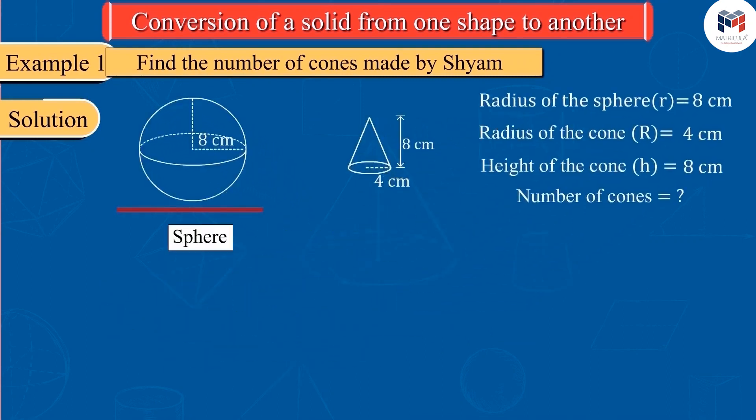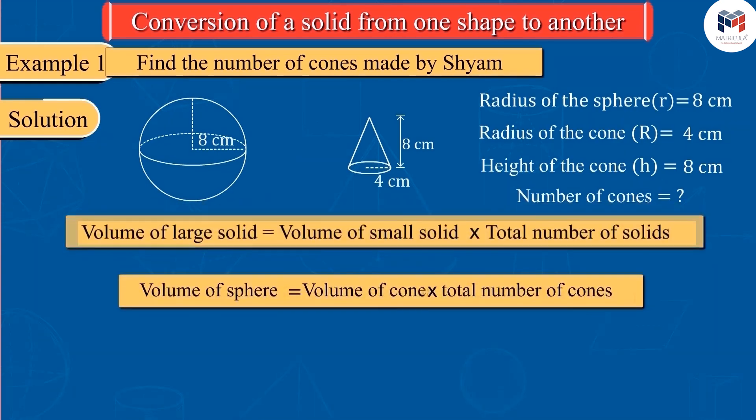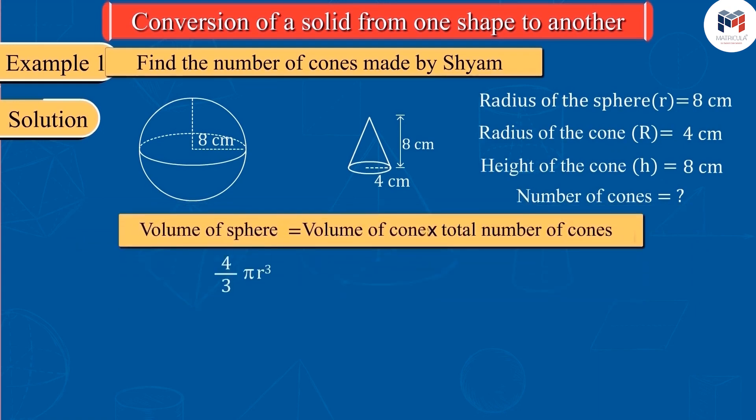Here, we have big solid sphere and small solid cones. Therefore, we can also write this statement as follows. We know that the volume of sphere and cone can be determined by these formulas.